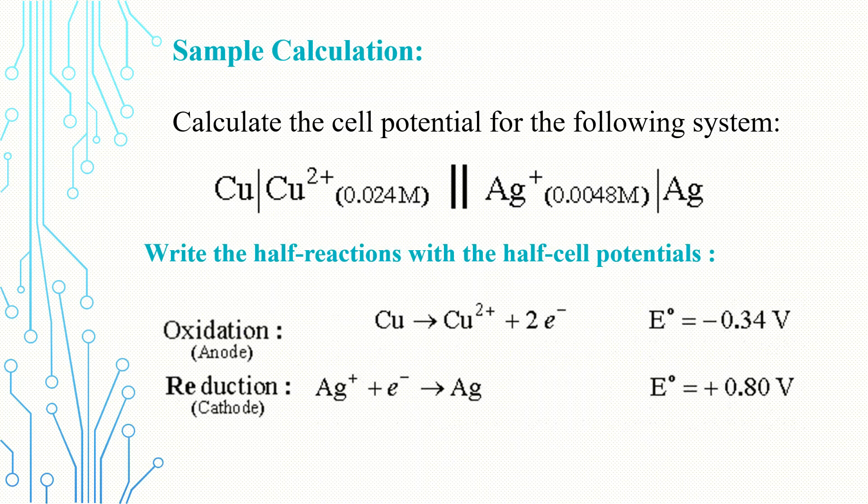In this galvanic cell redox system, we have two electrodes. The copper electrode will act as the anode, as oxidation happens in it, while the silver electrode acts as the cathode, where reduction happens, with the presence of a salt bridge.